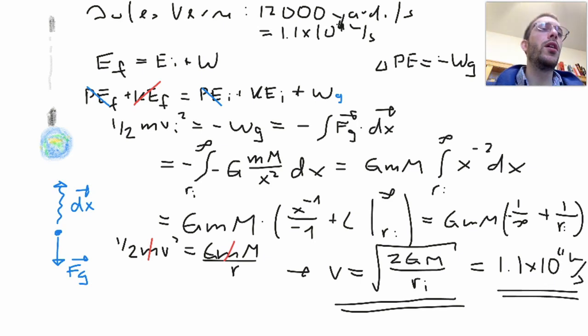1.1 times 10 to the 4 meters per second. So 1.1 times 10 to the 4 meters per second is the speed needed, so if you shoot the projectile at this speed at the surface of the Earth it will never come back down, it will actually go to infinity. That's why we call this velocity the escape velocity.